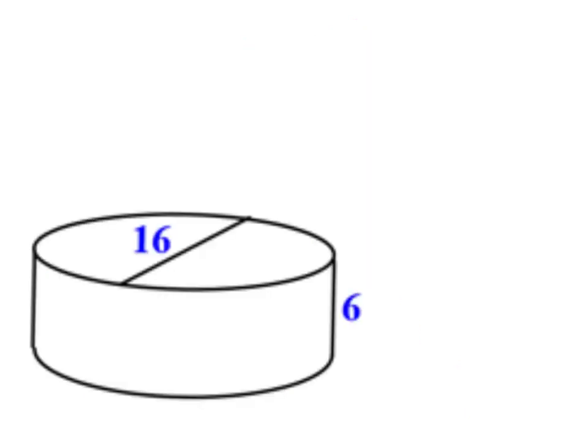Next, we have a cylinder. It has the exact same formula. Surface area equals 2B plus ph, two big bases plus the perimeter of that base times the height. It's just that this time, the base shape is a circle.